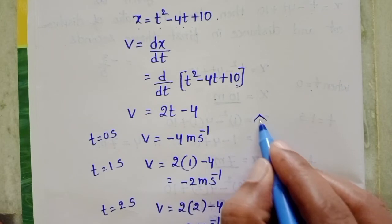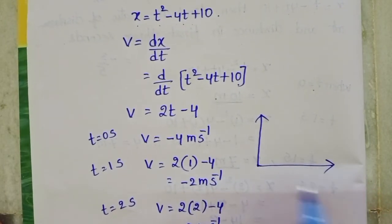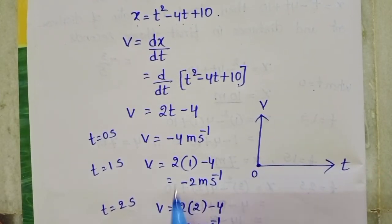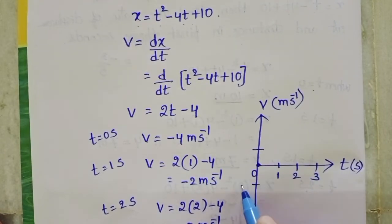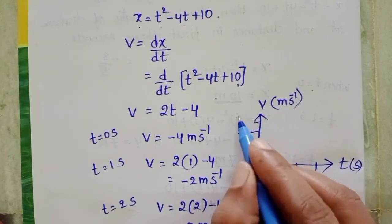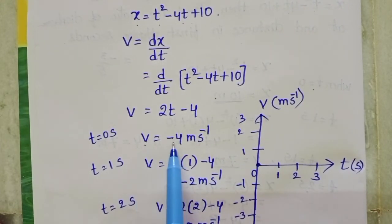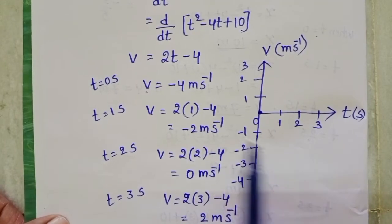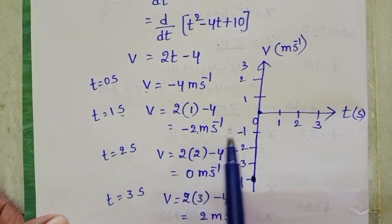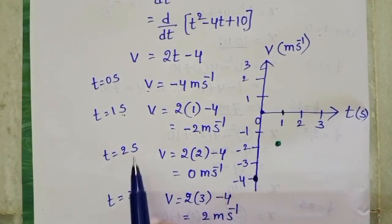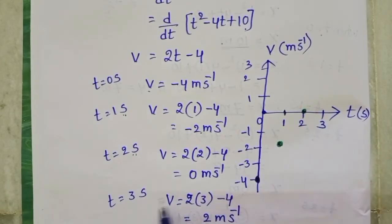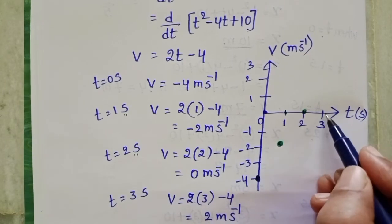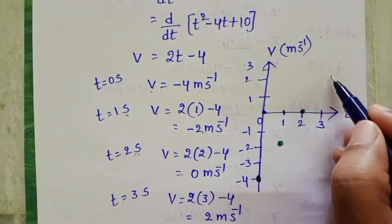Now draw the velocity-time graph with time on the x-axis and v on the y-axis. At t = 0, v = minus 4; at t = 1, v = minus 2; at t = 2, v = 0; at t = 3, v = 2 m/s.